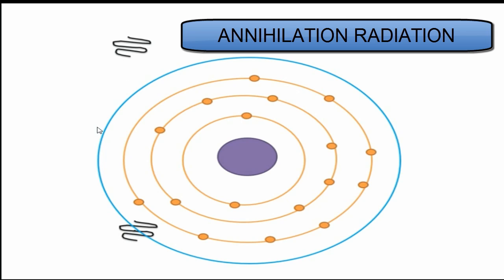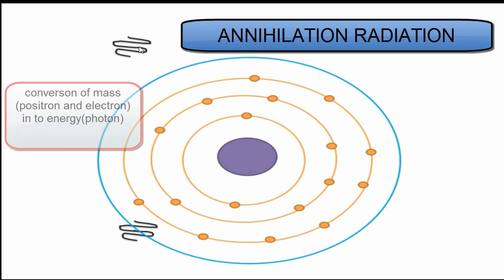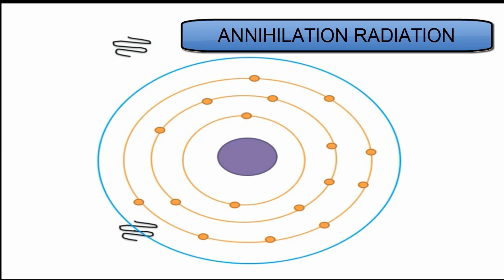This means that the positron and electron, which have rest mass energy of 0.51 MeV, are converted into energy of photons—two photons of 0.51 MeV. This conversion of mass into energy takes place when a positron combines with an electron to produce two photons.